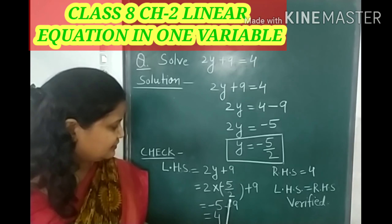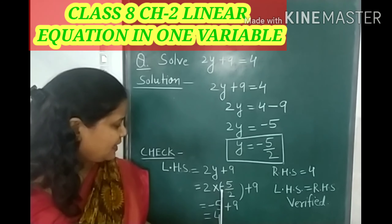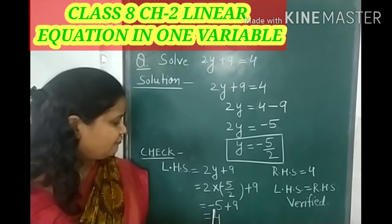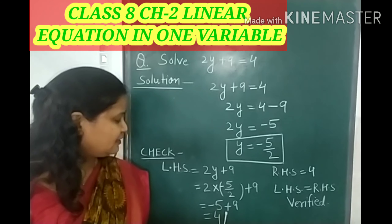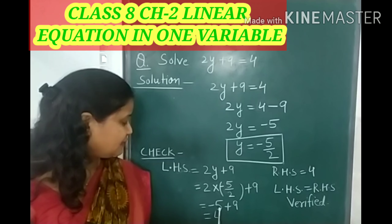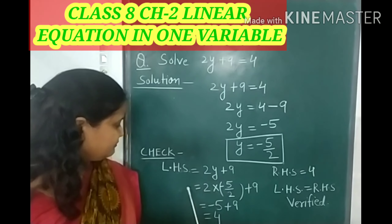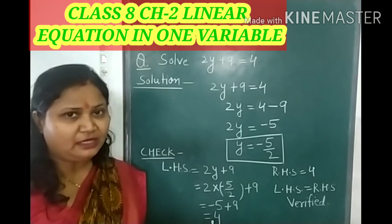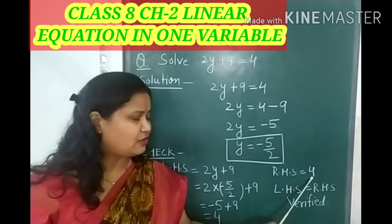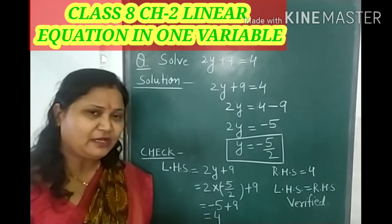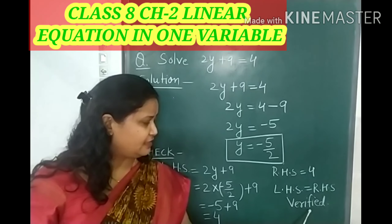The 2 in the numerator and denominator cancel out, leaving minus 5 plus 9. When you compute minus 5 plus 9, the result is 4. So the left hand side comes out to be 4, and the right hand side was already 4. Since left side equals right side, our result is verified.